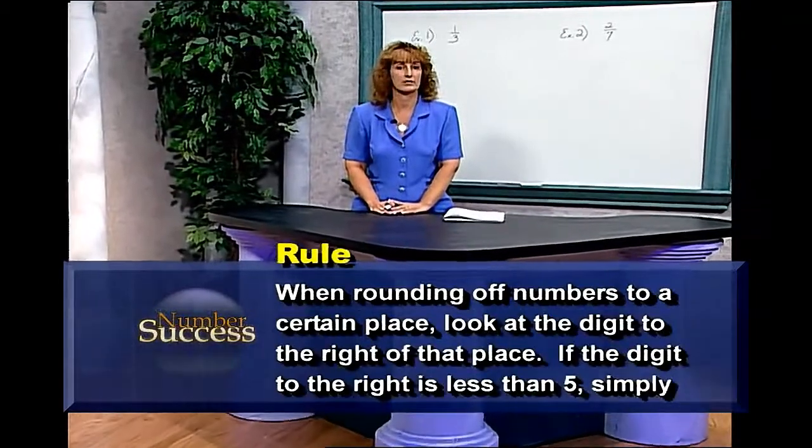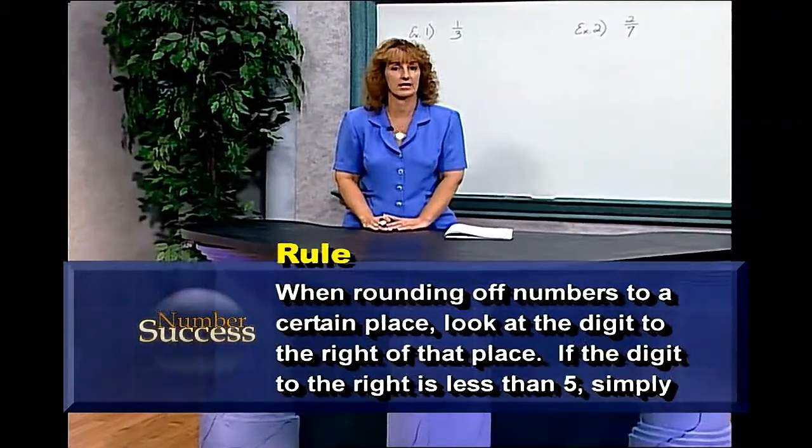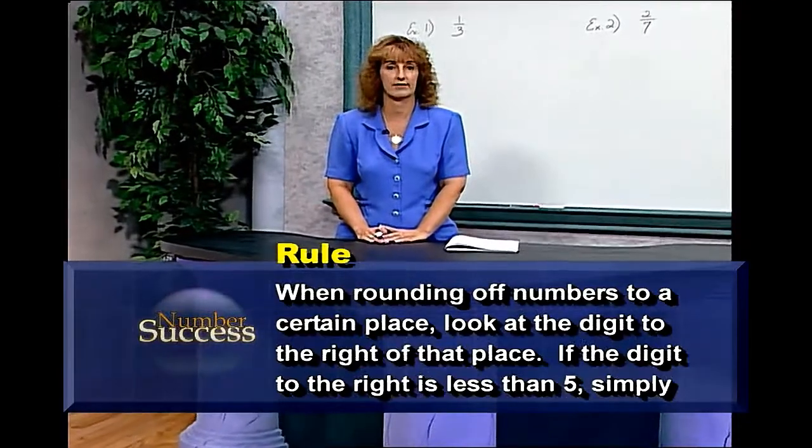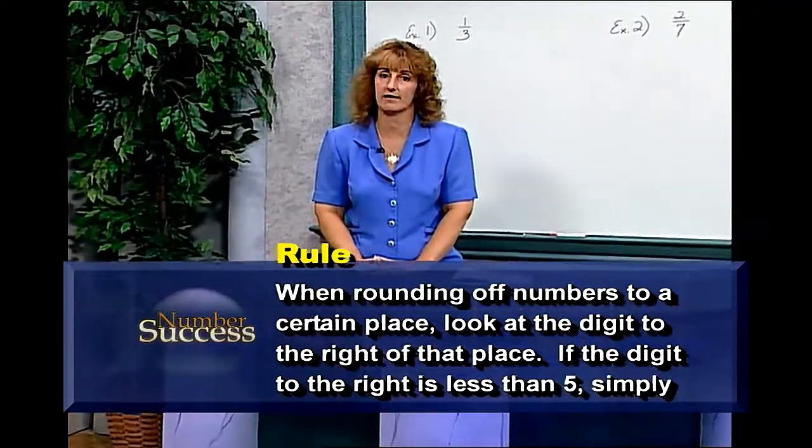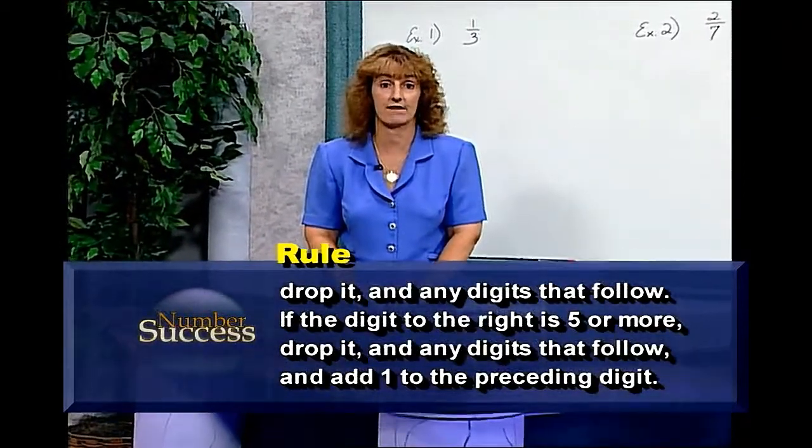Our rule is: when rounding off numbers to a certain place, look at the digit to the right of that place. If the digit to the right is less than five, simply drop it and any digits that follow.